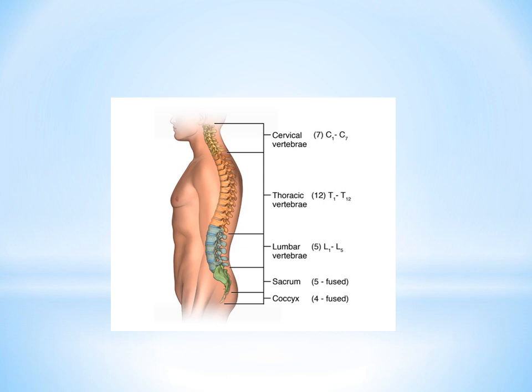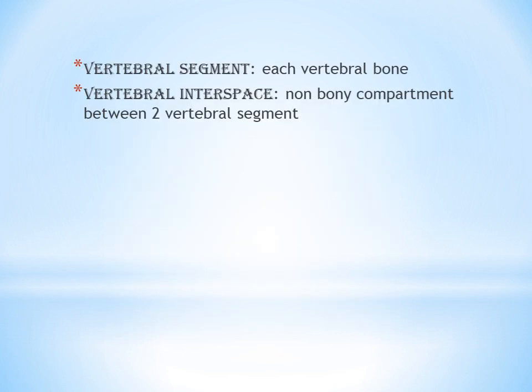The sacrum has 5 vertebrae but they are fused. Similarly, the coccyx has 4 and they are also fused. So if you get a question that says fracture at T4, it means fracture of the fourth thoracic vertebrae.